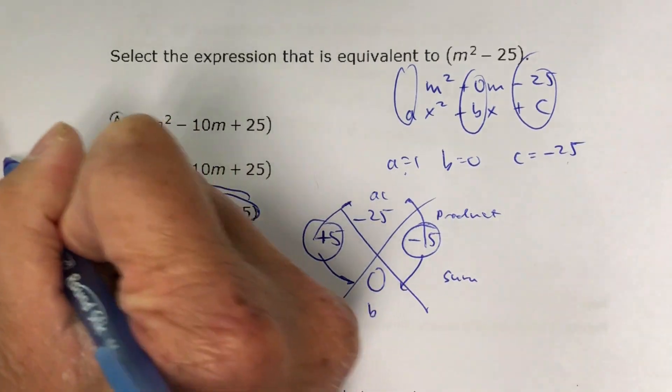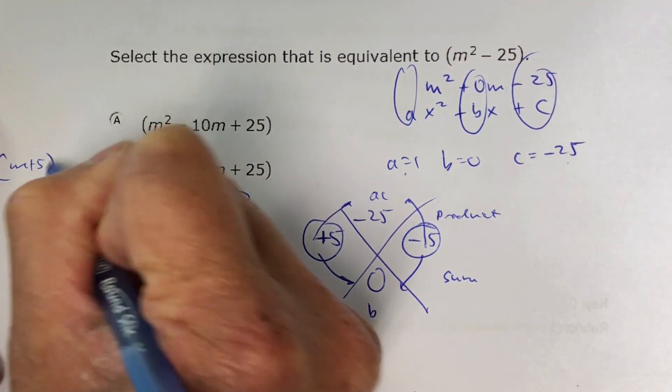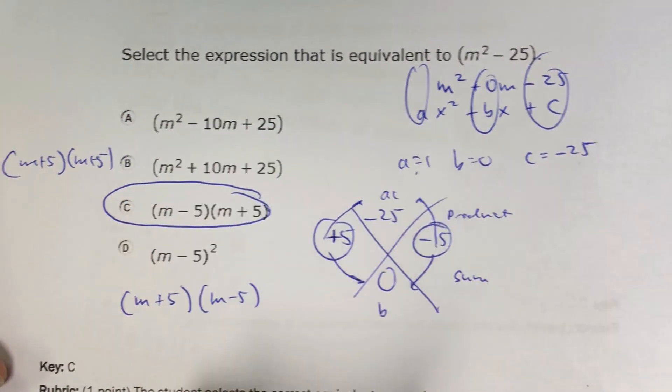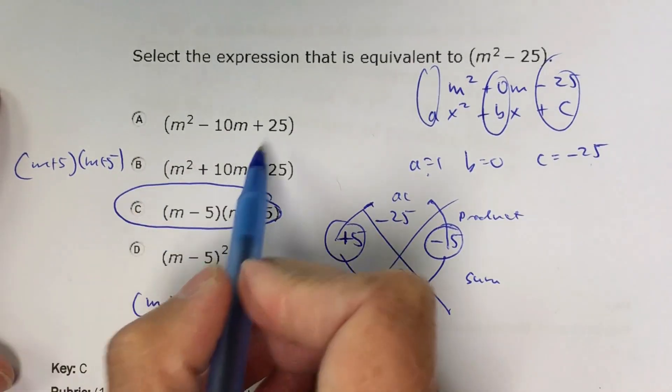The reason why B is incorrect, this would actually be m plus 5, m plus 5. And remember, you can always check your answer by using FOIL or the box method.